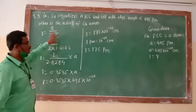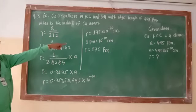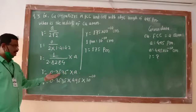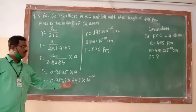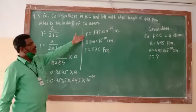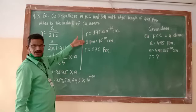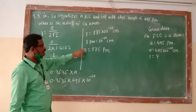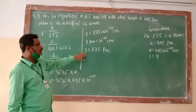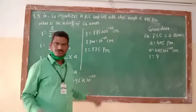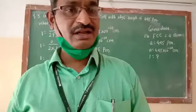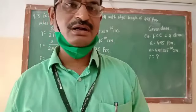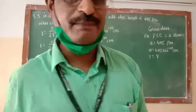This is how the problem is solved — very simple. Given the edge length a, simply substitute it, multiply by the factor 0.3535, use log of first term plus log of second term, and antilog gives the radius in centimeters. Convert to picometers using 1 pm = 10⁻¹⁰ cm. With that, we have solved three problems. For practice, solve the remaining problems of the chapter on solid state.